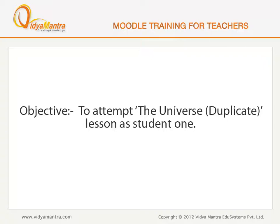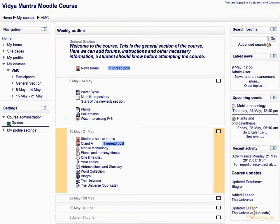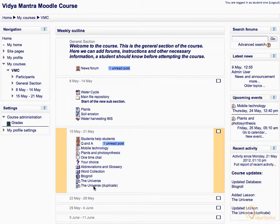In this lesson, we will attempt the universe duplicate lesson as student 1. First, switch to Google Chrome. Notice that you are logged in as student 1. Click on the universe duplicate lesson activity to open it.